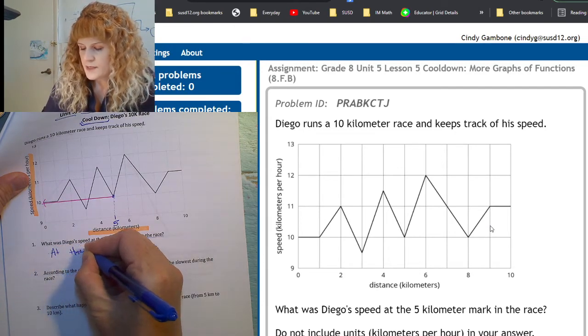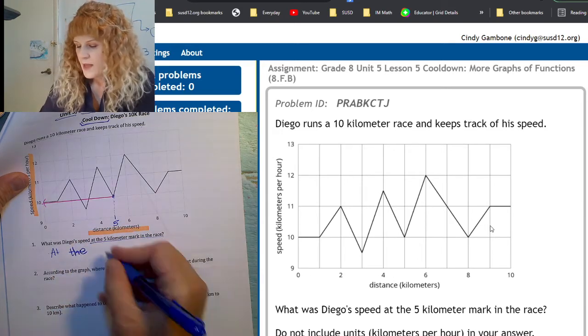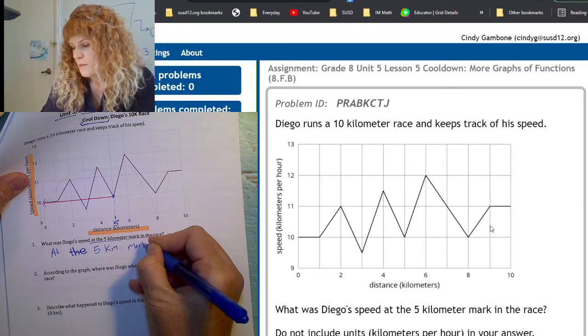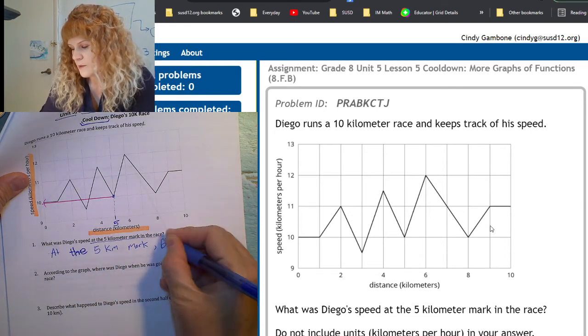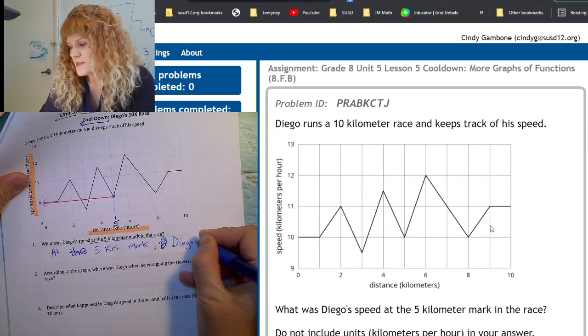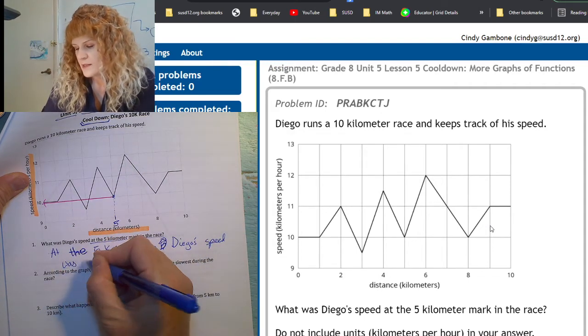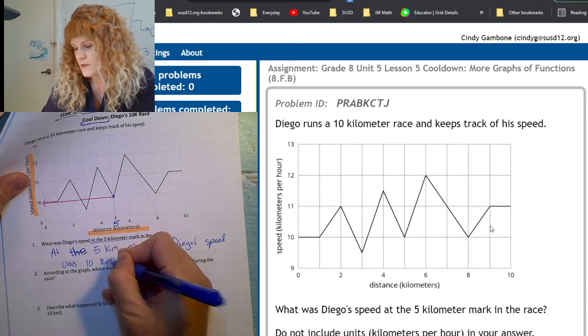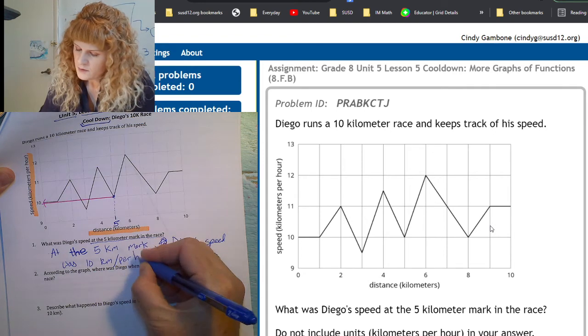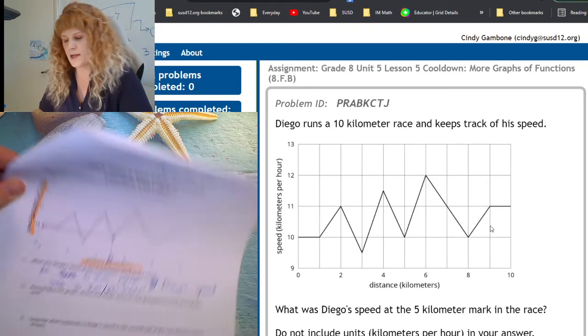Try writing your answers in complete sentences so that it makes the most sense to you. So, at the five kilometer mark, Diego's speed was 10 kilometers per hour. Make sure I got that right. Yeah, kilometers per hour. I got it.